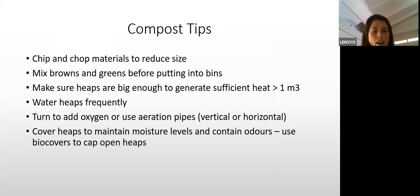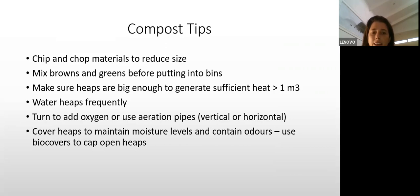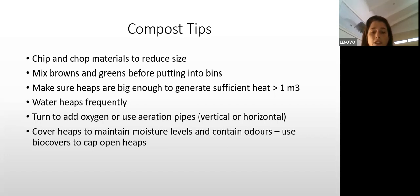Tips for successful composting: chipping is important as it makes mixing easier. Moisture is crucial — a lot of people forget to water the compost heap and it dries out and stops composting. Adding oxygen through turning or aeration paths is also very important, with various vertical and horizontal systems available. Covering heaps with vinyl or plastic helps retain moisture in summertime and contain odors, especially when food waste is present.